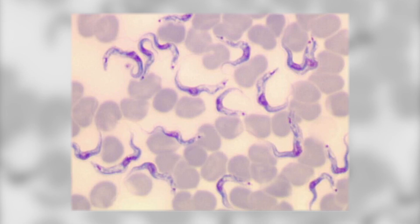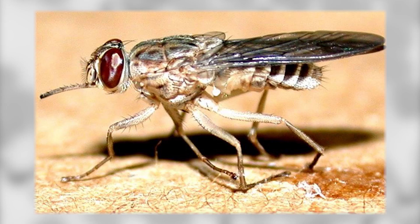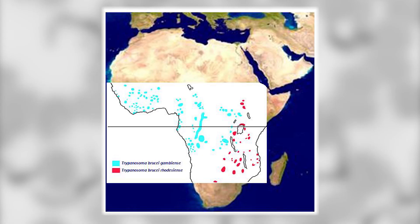African trypanosomes are responsible for human African trypanosomiasis, or sleeping sickness, and animal African trypanosomosis. The trypanosomes that cause sleeping sickness are tsetse fly-transmitted protist parasites present in many geographical foci in sub-Saharan Africa.